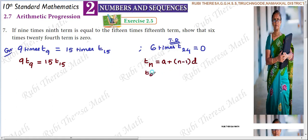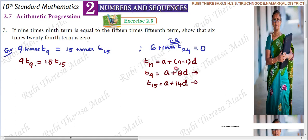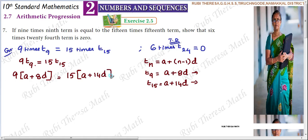Here, T9 is nothing but a plus 8d, and T15 is nothing but a plus 14d. So we are going to substitute: where T9 appears we write a plus 8d, and where T15 appears we substitute a plus 14d.